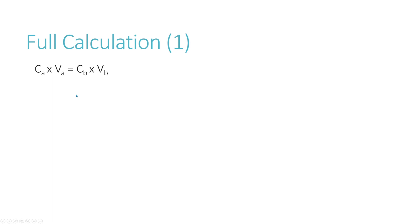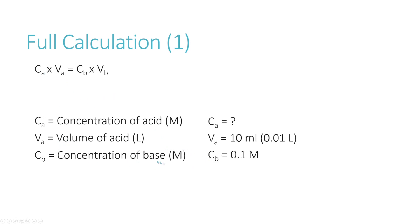For us, the thing we don't know is the concentration of the acid. However, we do know the other three things. We know the volume of the acid, which in this case is 10 milliliters. Note that we are working in liters here, so we have to convert our milliliters into liters. And the concentrations are reported in molar. The concentration of the base, we know because we're using a 0.1 molar concentration of sodium hydroxide.